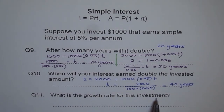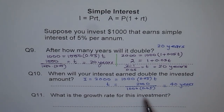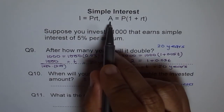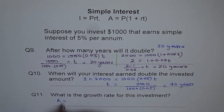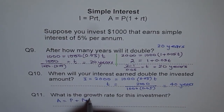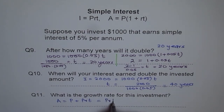What is the growth rate for this investment? Growth rate means how many dollars per year. To find this we can investigate the amount formula. A equals P times 1 plus RT, and using the distributive law we get A equals P plus PRT. Let me reorganize this as A equals PRT plus P. There is a reason to do that.